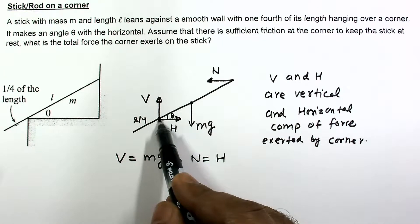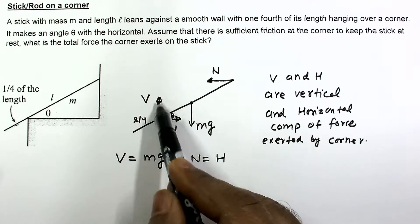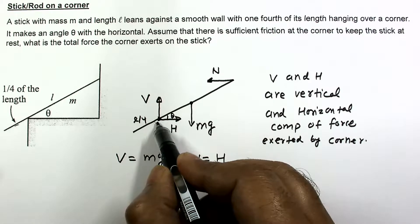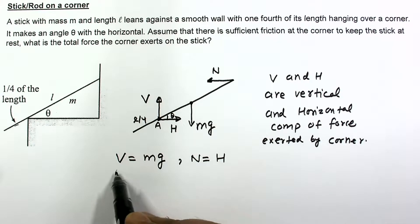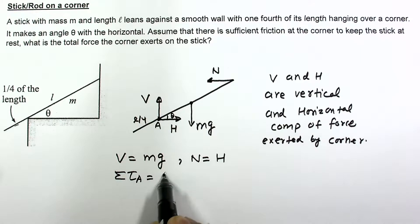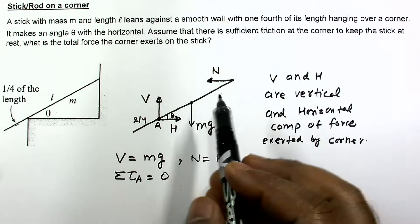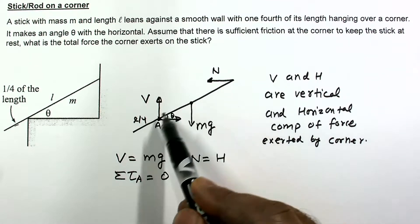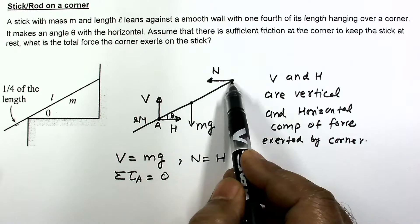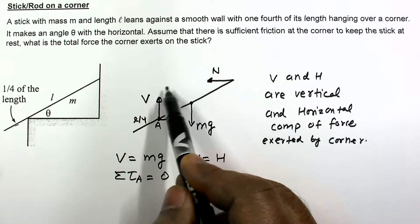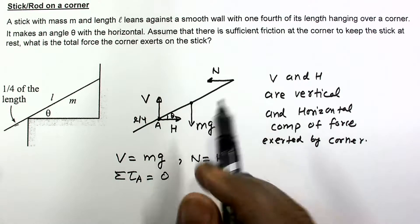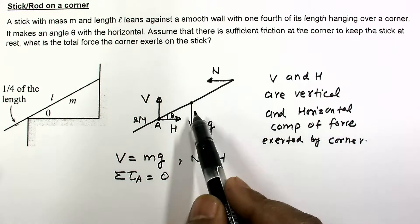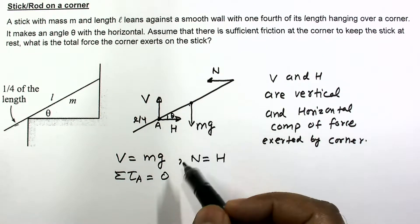We should choose a point such that the torque of V and H becomes zero about it. So I am choosing the corner point, call it A, and writing net torque about A equal to zero. About this point, torque comes from MG and the normal reaction. The normal reaction applies torque in the anti-clockwise direction and MG applies torque in the clockwise direction.